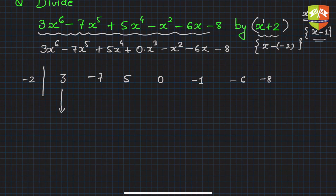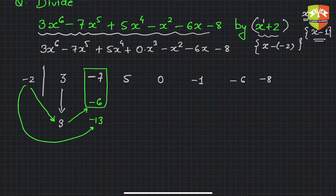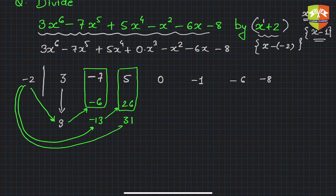Now, bring down the first coefficient, 3. Multiply -2 times 3 to get -6; write that under the next coefficient and add the column to get -13. Then multiply -2 times -13 to get 26; write it under the next coefficient and add to get 31. Then multiply -2 times 31 to get -62; write it there.